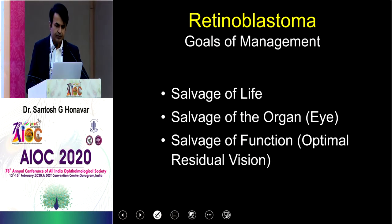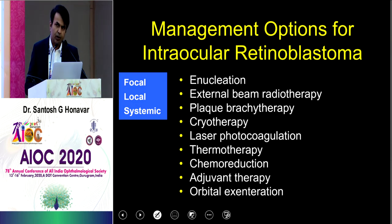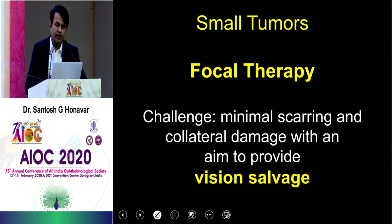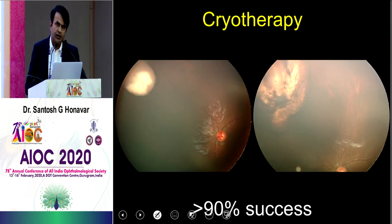Coming to management — goals are very clear. In any cancer, salvage of life is the primary goal, followed by salvage of the organ, and then salvage of visual function. When you have a very small tumor with no risk to life, you rely on focal therapy. You cannot blast a foveal tumor with laser and expect the child to have vision, so you have to be very conservative. Options include cryotherapy for peripheral tumors — we prefer it for nasally located peripheral tumors.